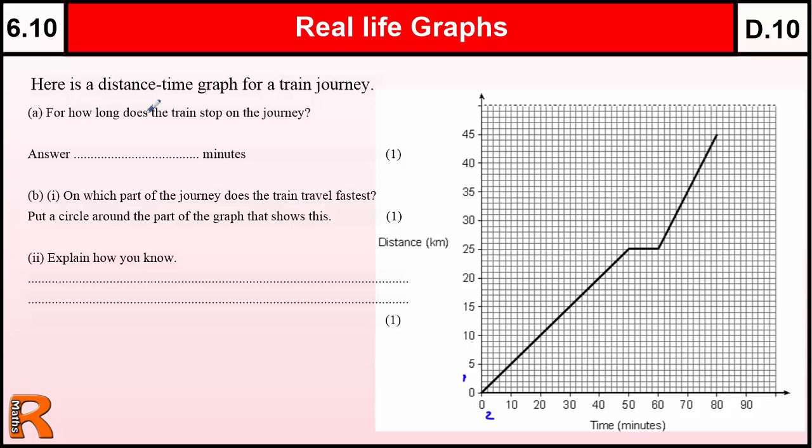Now, to answer the question of how long does the train stop on the journey, well, when we've got a distance time graph, when we've got a diagonal line, a line that's going up, that means something is moving. This is the first part of the journey, where it goes 25 kilometres in 50 minutes, and then there's this section here which is flat, which means it's not going anywhere, therefore this is the bit that's not moving.